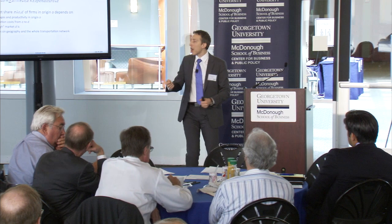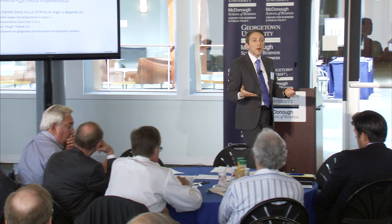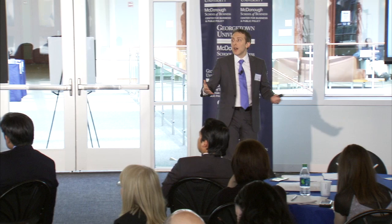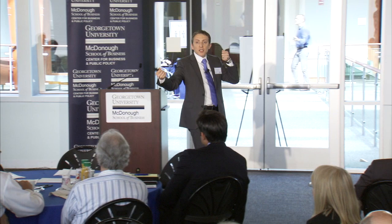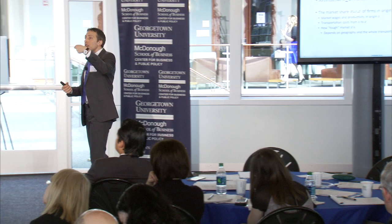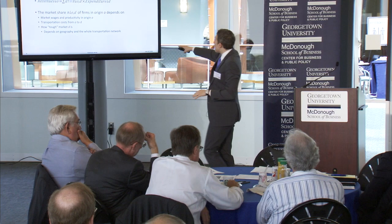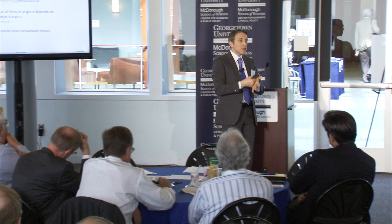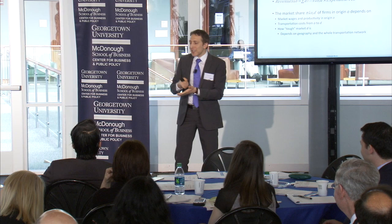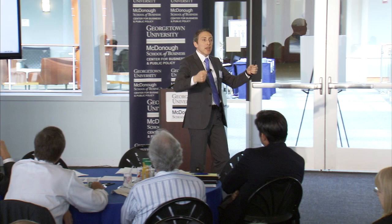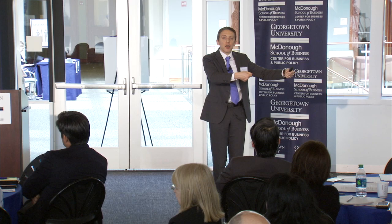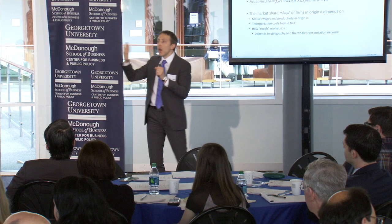For example, if wages in Cook County go down, or productivity in Cook County goes up, that makes the FOB price lower and makes the market share of Cook County anywhere higher. Or if transportation costs from Cook County to Manhattan go down, this decreases the CIF price for stuff produced in Chicago and sold in New York, increases the market share of Cook County, and decreases the market share of everybody else selling there. This is where the rubber hits the road — or really, where the wheel hits the rail — because what I'm going to do is reduce transportation costs between two places, and that'll change the market share, then change the labor demand in the origin, and from there change the employment, wages, real income, and everything else.